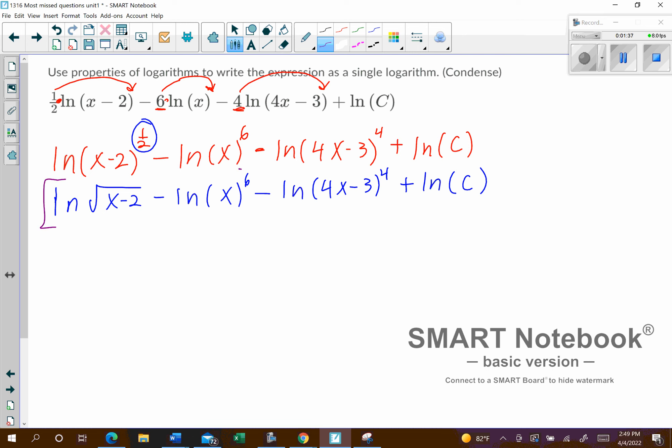So right here, the subtraction is actually a quotient rule, which brings it together as the natural log of the square root of x minus 2 divided by x to the power of 6. Okay, and so the same thing is going to happen here when I subtract that. So that's 4x minus 3 to the power of 4 plus the natural log of c.